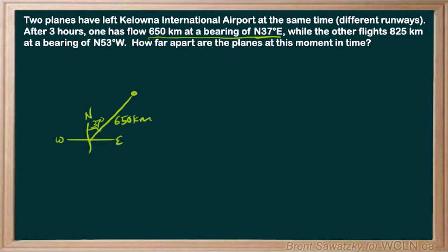Looking at the other plane: 825 kilometers, and this time north 53 degrees west. Again, north is the reference, and then we're going to turn 53 degrees — not to the east this time, but towards the west. So we draw that in: we were facing north and turned 53 degrees towards the west. This one is a little bit longer at 825 kilometers.